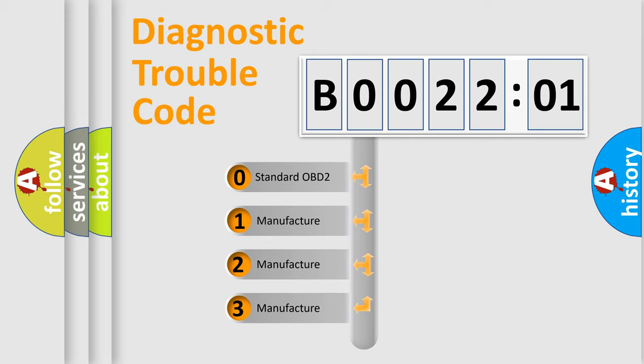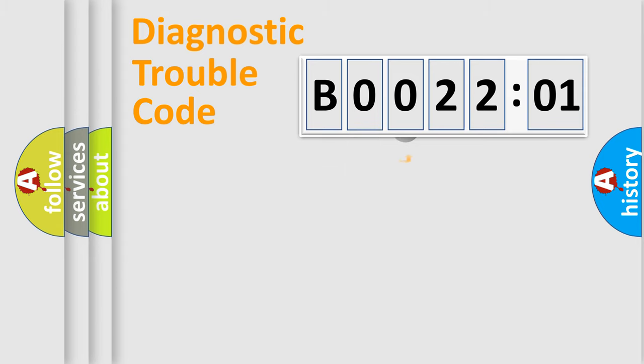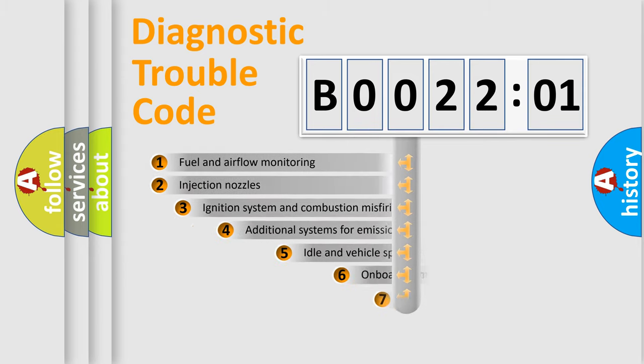If the second character is expressed as zero, it is a standardized error. In the case of numbers 1, 2, 3, it is a manufacturer-specific error expression.